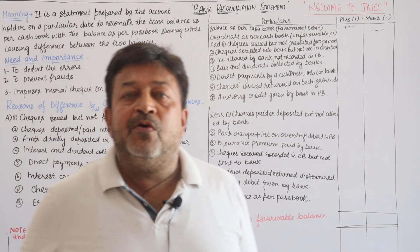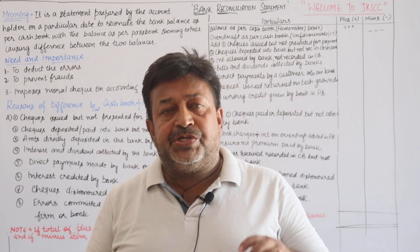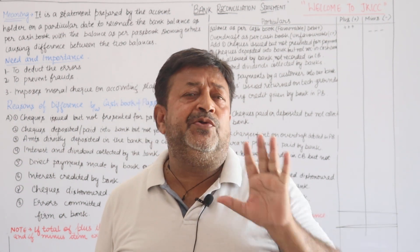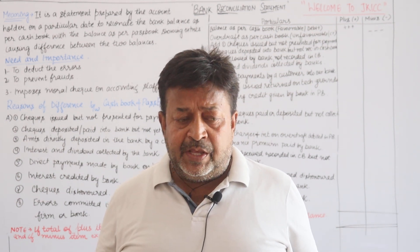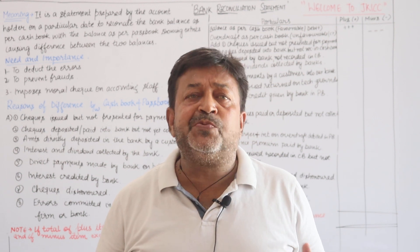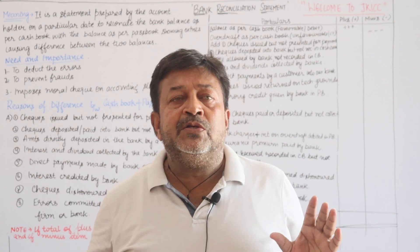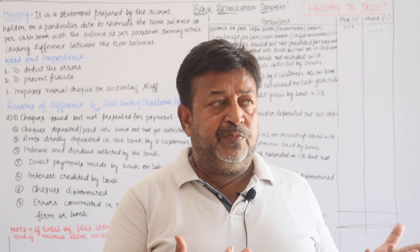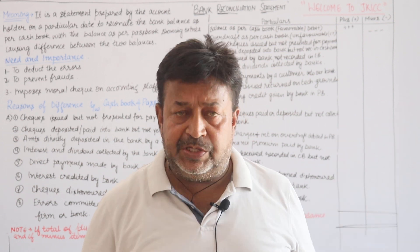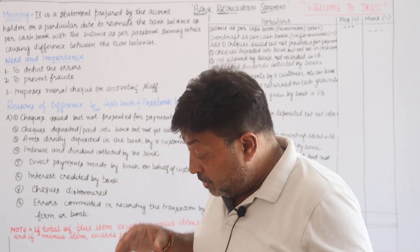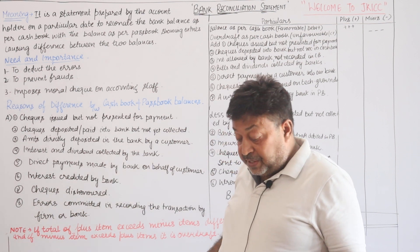Hi friends, welcome again to JK ICC. Today is a very important topic and you all are aware of it. We had cash book recently, where the customer records cash and bank transactions. We are talking about the bank column — when someone gives us a check, we collect payments in the bank. This topic is called Bank Reconciliation Statement.